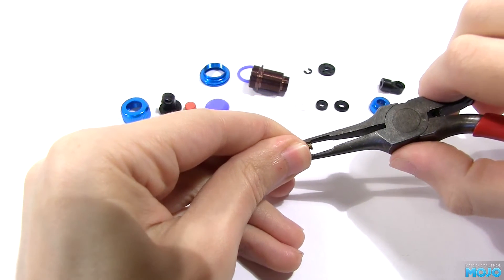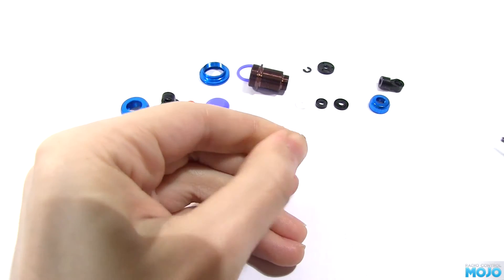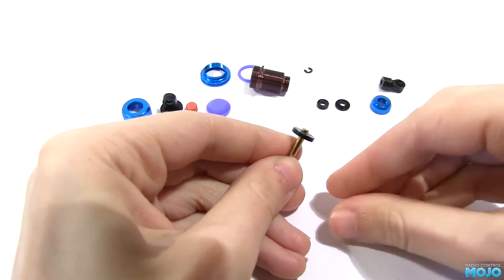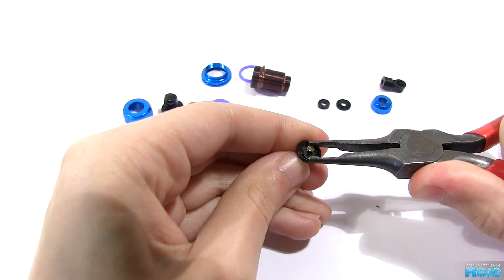Slot in whichever piston you're going to be using, make sure it's all the way down and pop in another E-ring into the end slot.